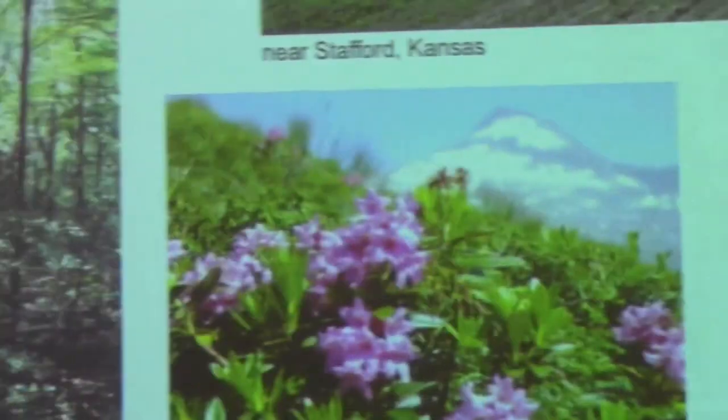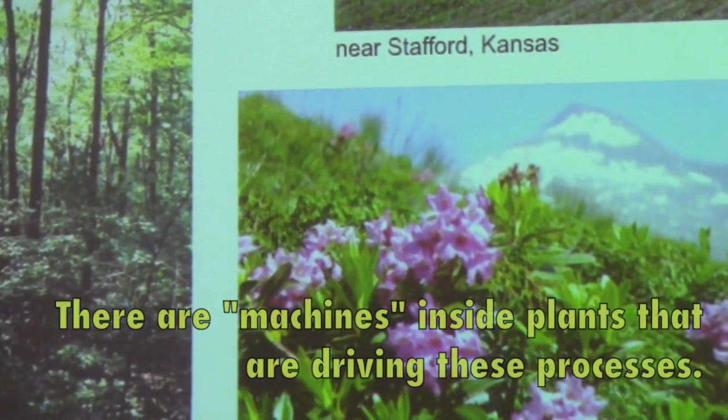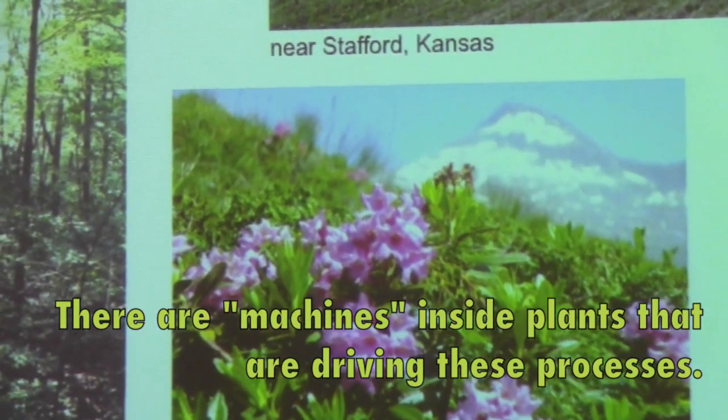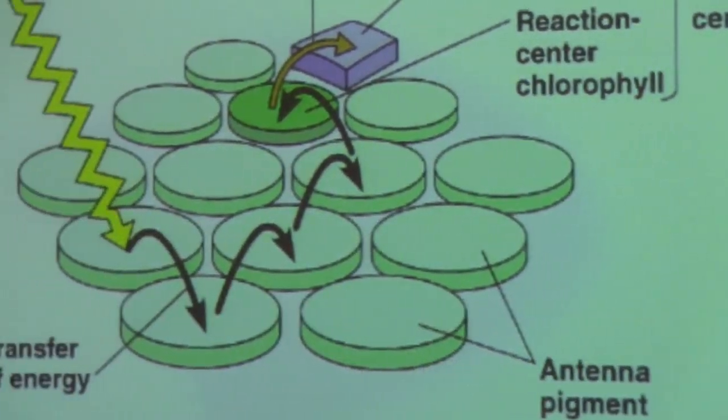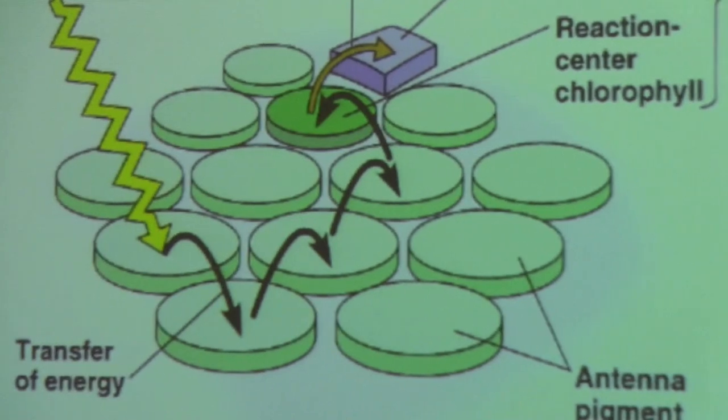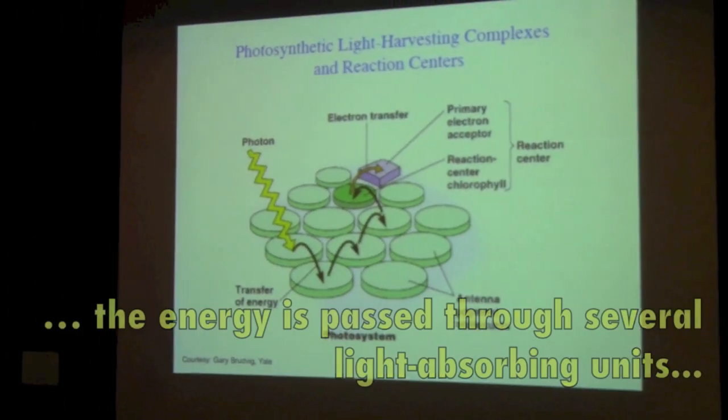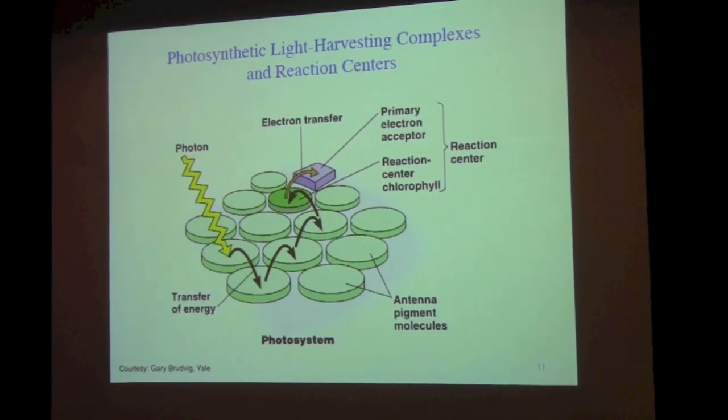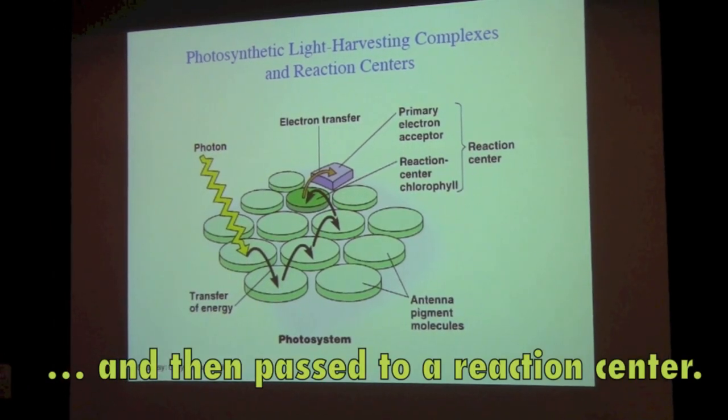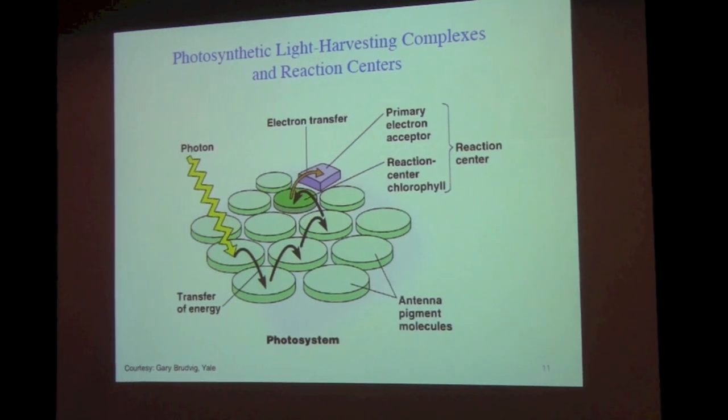So inside green leaves, there's biological machinery that's driving these processes. And it's really very beautiful machinery where light energy is absorbed and passed between various light-absorbing units and then passed to a reaction center where we try to drive this chemistry with light energy.